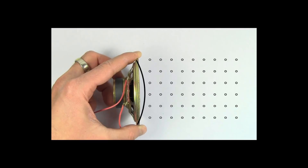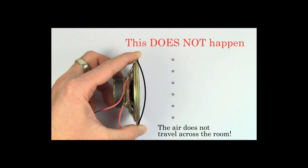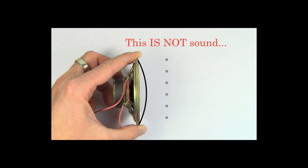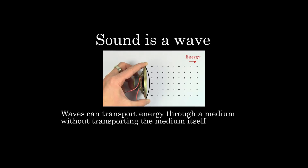This is an important enough fact to state again. Energy is traveling across the room here, but air itself is not traveling across the room. Only the disturbance within the air is traveling across the room. If air were being transported across the room, it would be better characterized not as sound, but as wind. This is why we call sound a sound wave — because it shares the defining feature of waves: being able to transport energy through a medium without having to transport the medium itself.